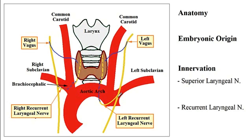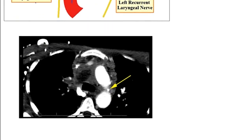Here you can note that we have the ascending aorta and on the other side the descending aorta, and the left recurrent laryngeal nerve runs in between the two. On the CT scan, you can see the ascending aorta and the descending aorta on the other side, and the arrow shows the left recurrent laryngeal nerve.